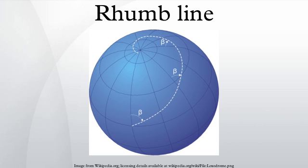The name is derived from Old French or Spanish 'rhumb' or 'rumbo', a line on the chart which intersects all meridians at the same angle. On a plane surface this would be the shortest distance between two points. Over the Earth's surface at low latitudes or over short distances it can be used for plotting the course of a vehicle, aircraft, or ship.